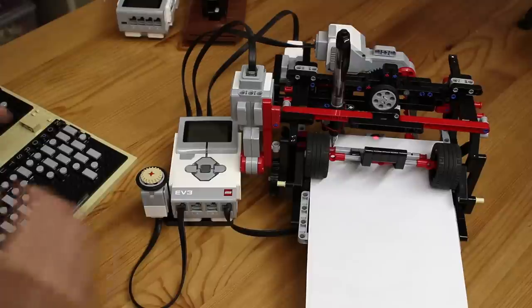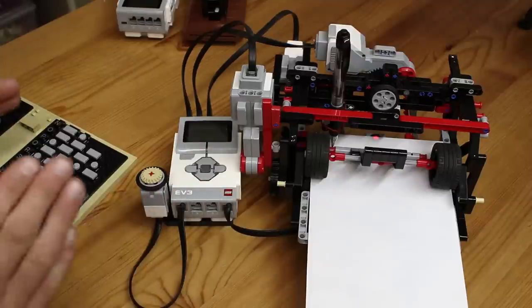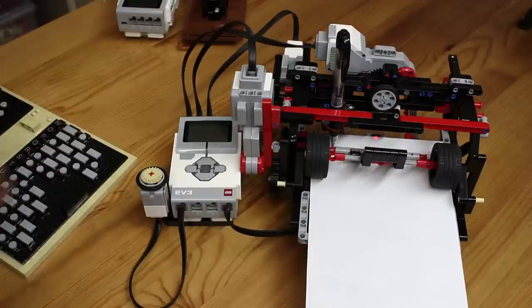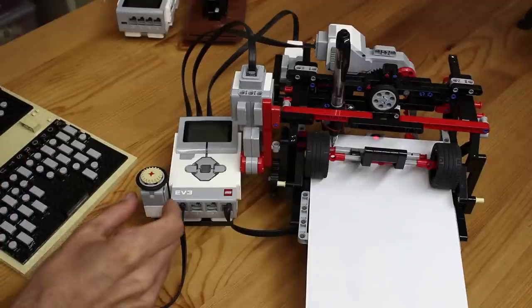Now there are several ways of getting information to an EV3 brick, but I wanted to keep it as simple as possible, and it doesn't get much simpler than Morse code. All you need to implement it is a single touch sensor.